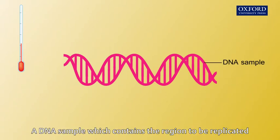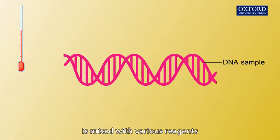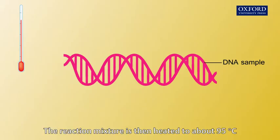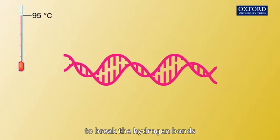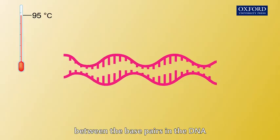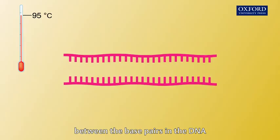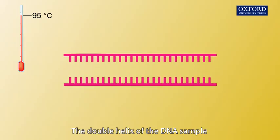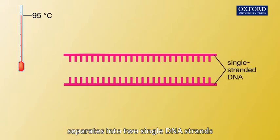A DNA sample which contains the region to be replicated is mixed with various reagents. The reaction mixture is then heated to about 95 degrees Celsius to break the hydrogen bonds between the base pairs in the DNA. The double helix of the DNA sample separates into two single DNA strands.